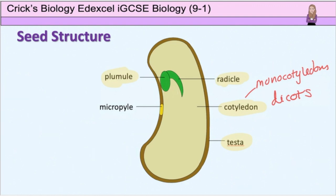Fruits provide a method of seed dispersal. Dispersal is the transfer of a seed away from the parent plant. It is necessary to avoid large numbers of seeds from the parent plant competing with each other and the parent plant for water, minerals, space and light. This increases the chance of survival for the plant.